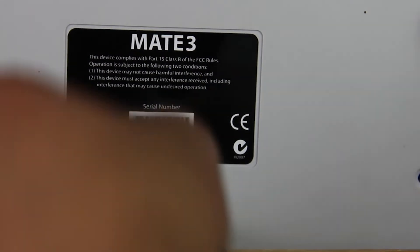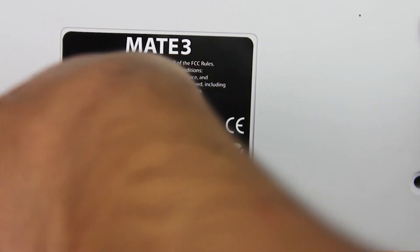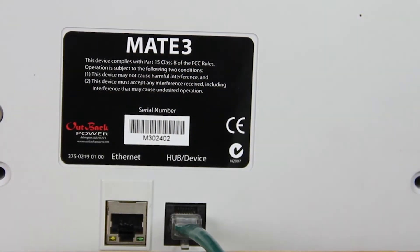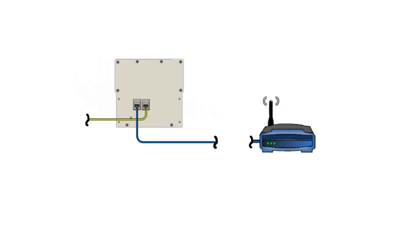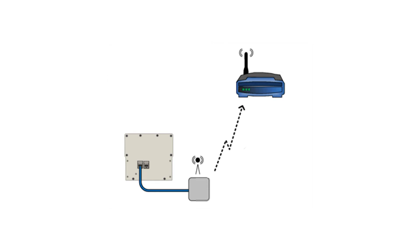Ensure your internet cable is not an Outback Green Cat5. This is not a twisted pair cable, so data is susceptible to interference. If using a wired connection, ensure your internet Ethernet run isn't over 50 feet, as this can potentially cause data loss resulting in intermittent connection. If using a wireless adapter, verify distance from the main router.